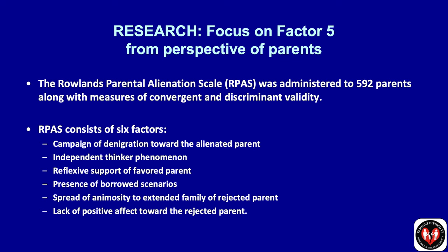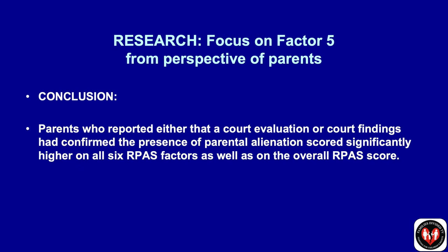During the data analysis stage, Rowlands used a very powerful tool called a factor analysis, which simplifies complex data and finds hidden patterns. Rowlands' factor analysis boiled it down to six factors, and five of them are exactly the same as Gardner's: a campaign of denigration towards the alienated parent, the independent thinker phenomenon, reflexive support, presence of world scenarios, and the spread of animosity to extended family. The sixth factor was lack of positive affect toward the alienated parent. Overall, Rowlands' study demonstrated that parents who had a court evaluation confirming parental alienation scored much higher on all six RPAS factors.